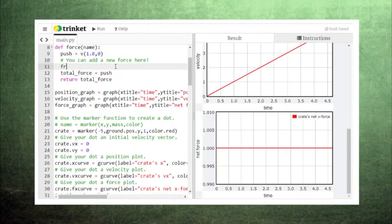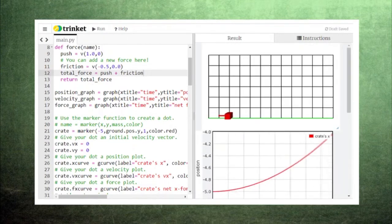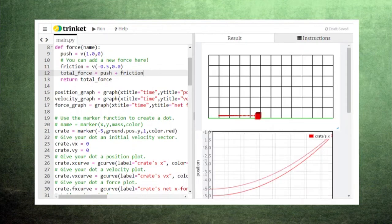We can also add multiple forces together. Suppose we push to the right with a force of one, and friction pushes backwards with a force of one-half. We can add these two forces in the total force, and see that our crate isn't accelerating as quickly as it did before.